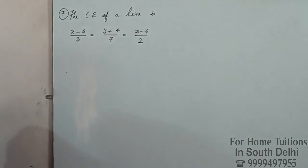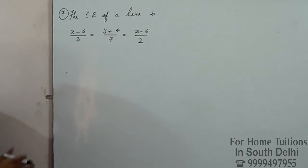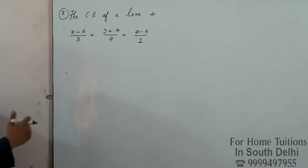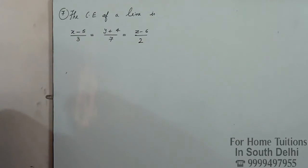We will convert the Cartesian equation to the vector form. You can see the vector form — convert to the process.